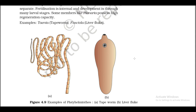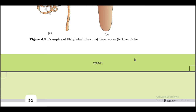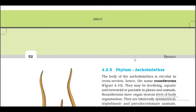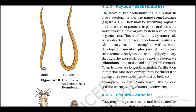Examples: Taenia (tapeworm), Fasciola (liver fluke). Figure 4.9 examples of Platyhelminthes: A. tapeworm, B. liver fluke. 4.2.5 Phylum Aschelminthes. The body of Aschelminthes is circular in cross-section, hence the name roundworms (Figure 4.10). They may be free-living, aquatic and terrestrial, or parasitic in plants and animals.